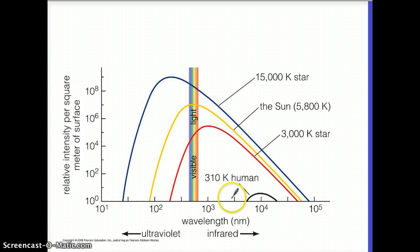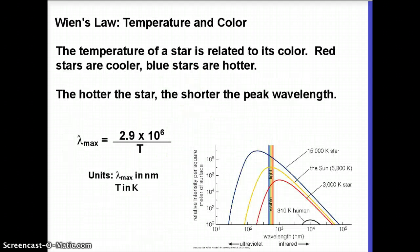The cooler you get, the more that peak wavelength shifts over to the right. The redder that peak wavelength is. And this gives us something called Wien's Law. W-I-E-N is pronounced Wien. It's German. And it's a relationship between temperature and color.